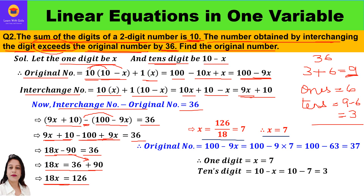The original number is 100 − 9x = 100 − 9 × 7 = 100 − 63 = 37. We can verify: since x = 7, the one's digit is 7 and the tens digit is 10 − 7 = 3, giving the number 37 — which matches our answer.